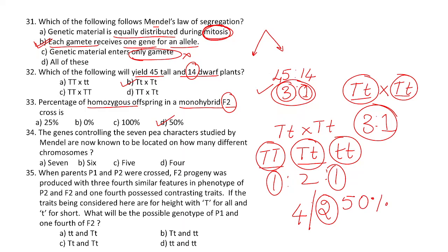Question 34: the genes controlling the 7 contrasting characters studied by Mendel in the pea plant are known to be located on how many different chromosomes? The genes controlling all 7 contrasting characters were found to be present in 4 different chromosomes. The answer is 4.